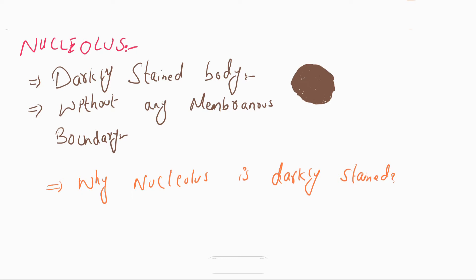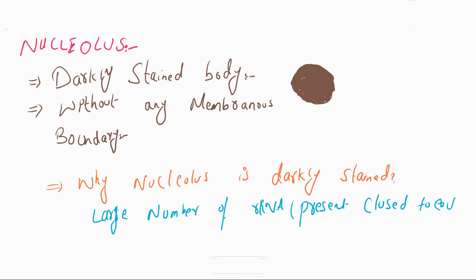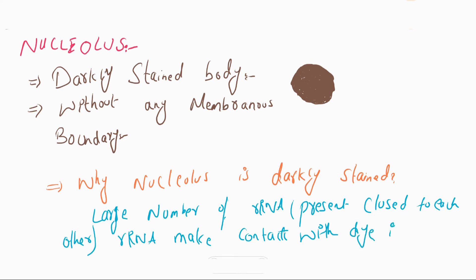The answer is that the nucleolus contains a large number of ribosomal RNA. These ribosomal RNAs are present close to each other within the nucleolus. So when these ribosomal RNAs make contact with dye, they accumulate a greater amount of dye, which is why the nucleolus appears darkly stained.